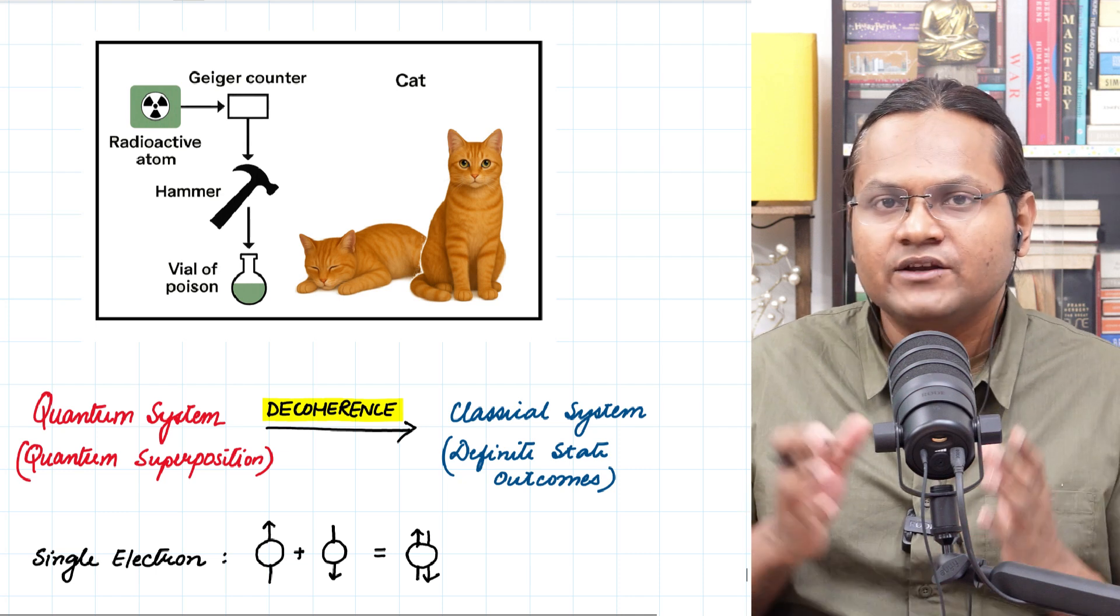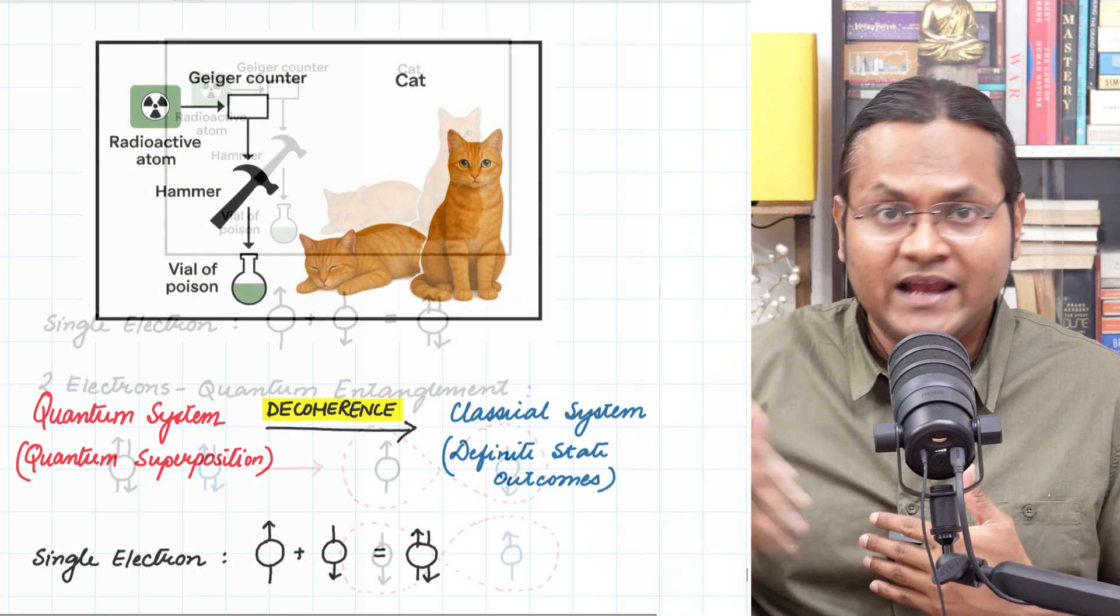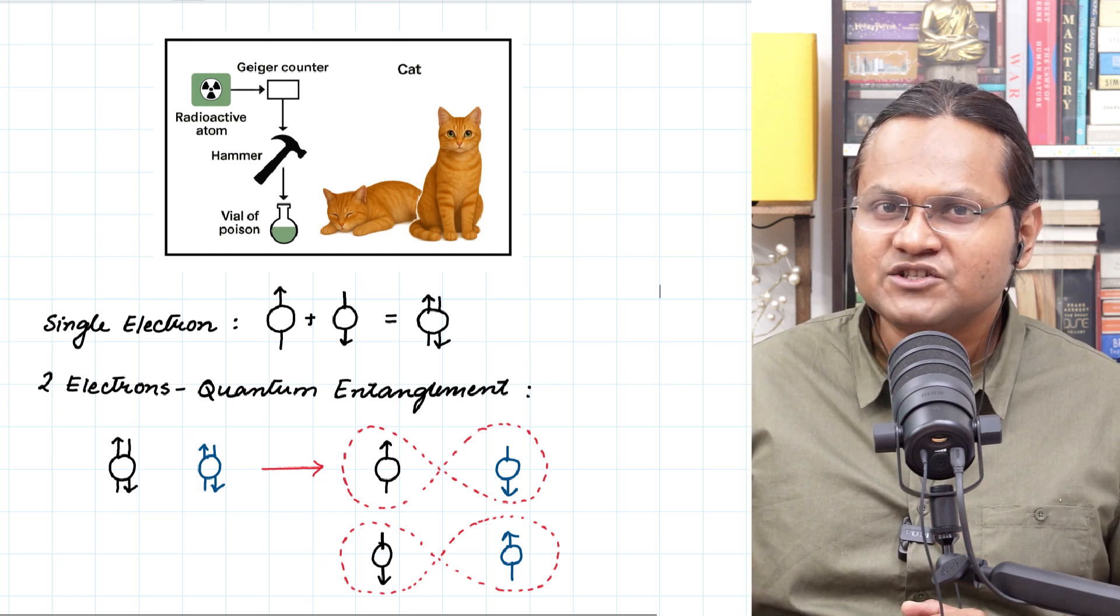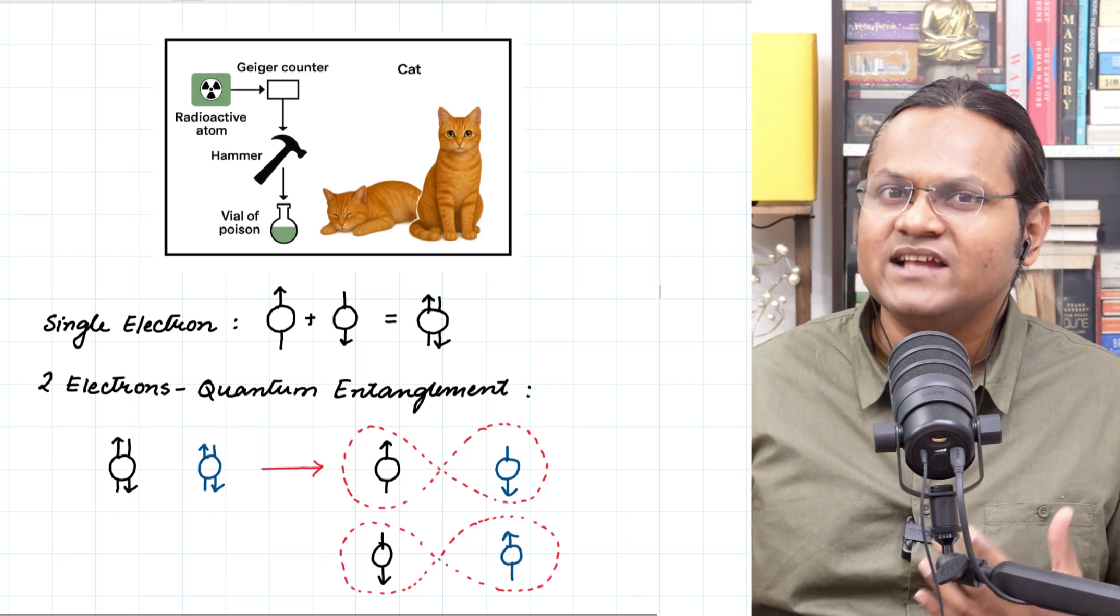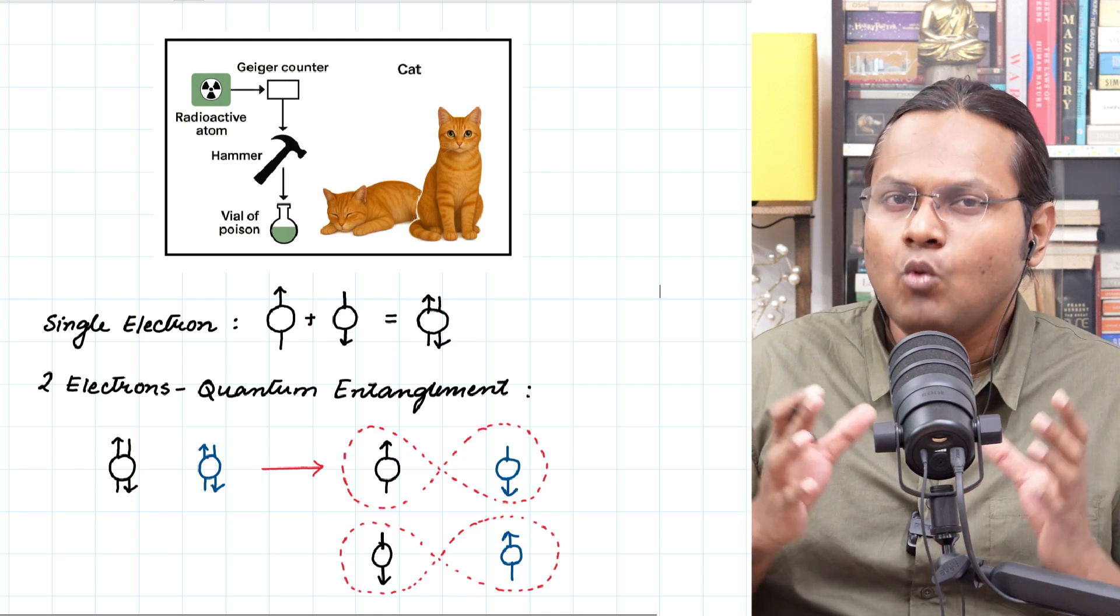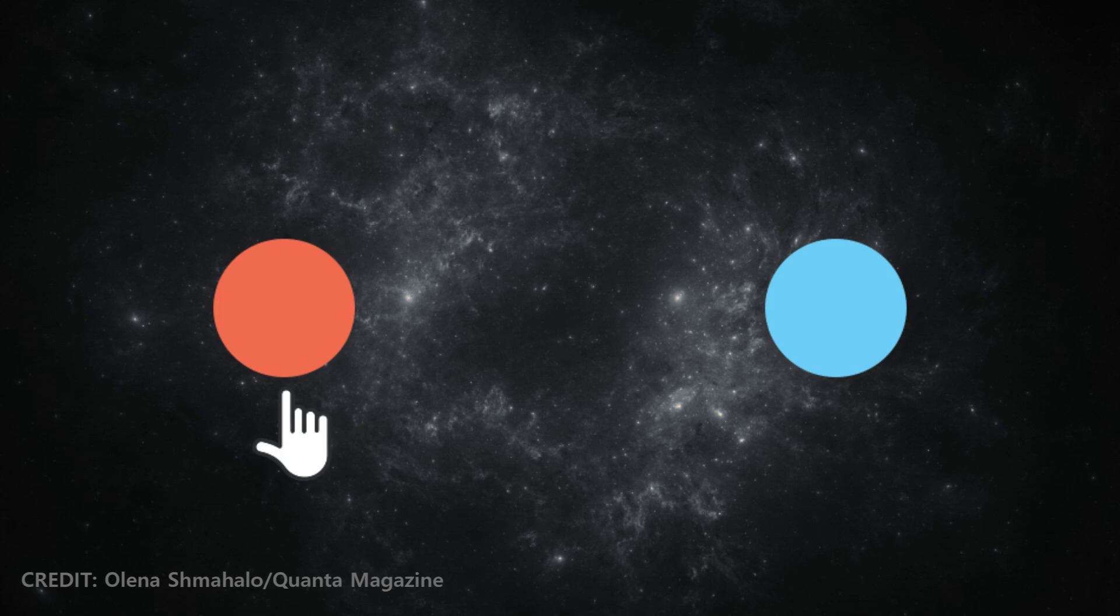What happens if this electron interacts with another electron? We can always create a scenario in which the interaction of the electrons happens in such a manner that their states become mutually exclusive. They essentially become quantum entangled. Then if I measure the spin of the first electron and it comes out to be spin up, it automatically means that the spin of the second electron will be spin down. And if the spin of the first electron is spin down, it automatically means that the spin of the second electron will be spin up. You see what's happening?